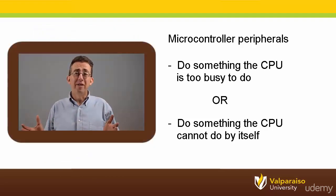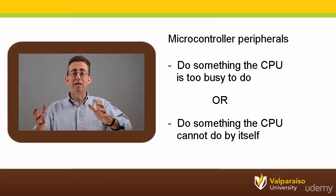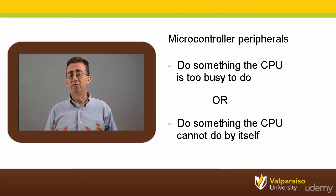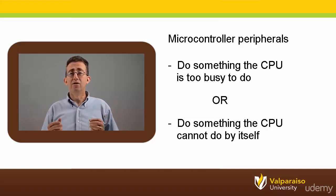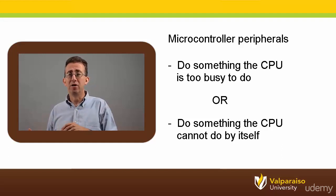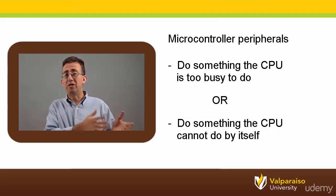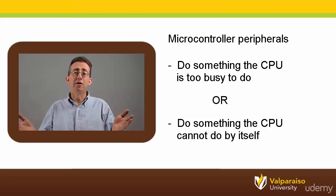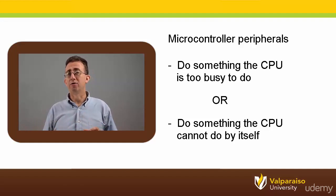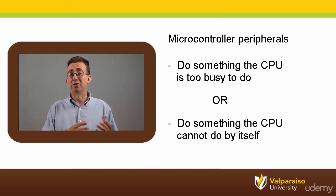Now, does this all seem a little vague? Well, at this point, it's our intent to be a little bit vague. As I mentioned in an earlier video, there is no universally accepted definition of what a peripheral is. Just remember that microcontroller peripherals simply perform tasks that CPUs cannot do by themselves, or the CPU is simply too busy to perform. And by keeping our definition of peripherals so broad, it will conveniently allow us to group just about everything else besides the microcontroller's CPU and memories into this one category.